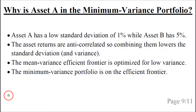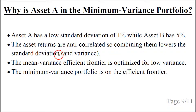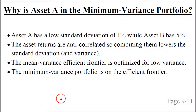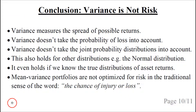So why is asset A in the minimum variance portfolio? It is because asset A has a low standard deviation of 1% while asset B has 5%. The asset returns are anti-correlated, so combining them lowers the standard deviation of the portfolio. The mean variance efficient frontier is optimized for low variance, so the efficient frontier will include combinations of the two assets. This is why asset A is in the minimum variance portfolio — because we are minimizing the variance. The conclusion is that variance is not a risk measure.